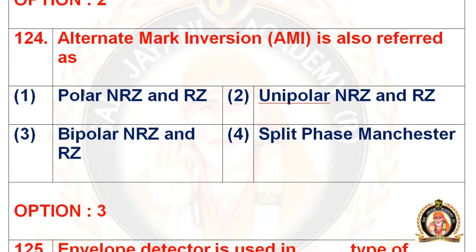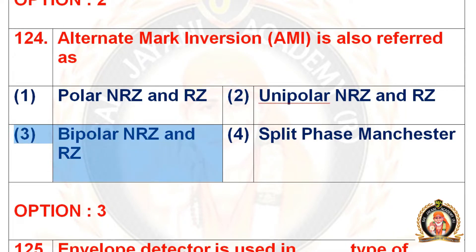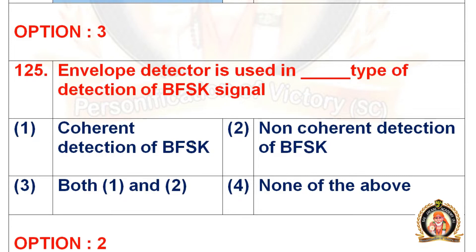Question 124: The alternate mark inversion (AMI) is also referred to as. Options are polar NRZ and RZ, unipolar NRZ and RZ, bipolar NRZ and RZ, and split-phase Manchester. The right option is the third one, that is bipolar NRZ and RZ.